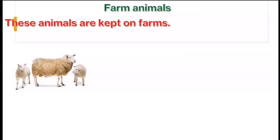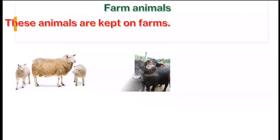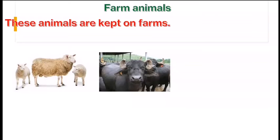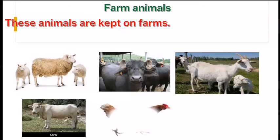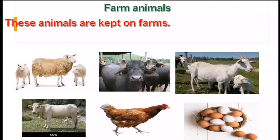Farm animals help us in different ways. These animals are kept on farms. For example, sheep — we get wool from sheep. Buffaloes — we get milk and meat from buffaloes. Goat — we also get milk and meat from goats. Cow. And lastly, hen — chickens are raised on poultry farms. We use their eggs and meat for food.